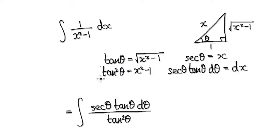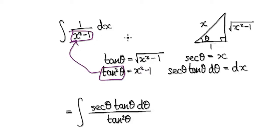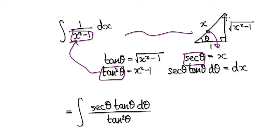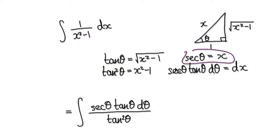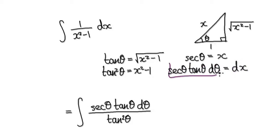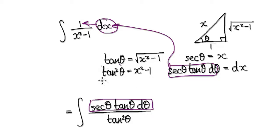So tan theta equals the square root thing over 1. We want to extract this, so square both sides. That gives you tan squared theta equals x squared minus 1, which is exactly what we need, so we can substitute tan squared into the integral. Now looking back at the diagram, we need to extract dx. Secant theta equals hypotenuse over adjacent, which is x. Differentiating both sides gives us dx.